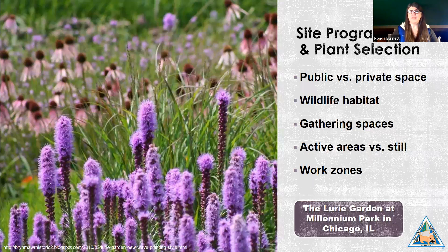The photograph on this slide is similar to the one we just saw, but this is not a natural area. This photo was taken at the Lurie Garden in Millennium Park in downtown Chicago, Illinois. Every plant you see here was selected by a designer. The first criteria we will consider is how site programming can help you with your plant selection.